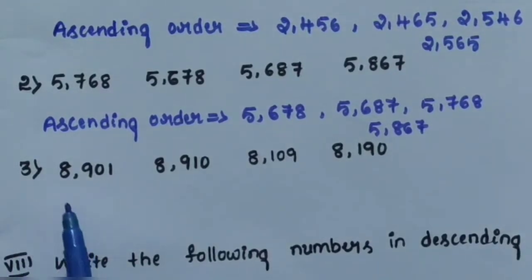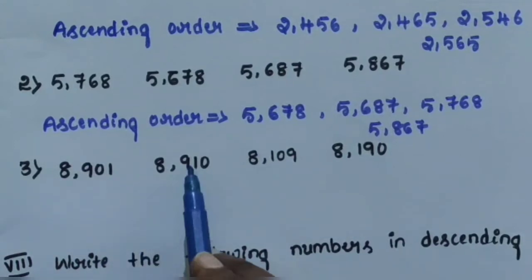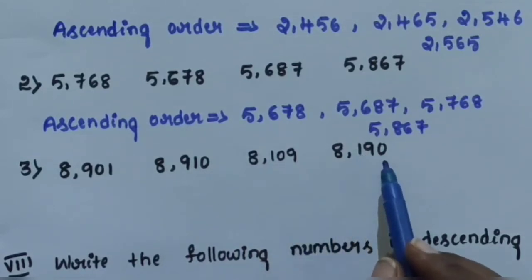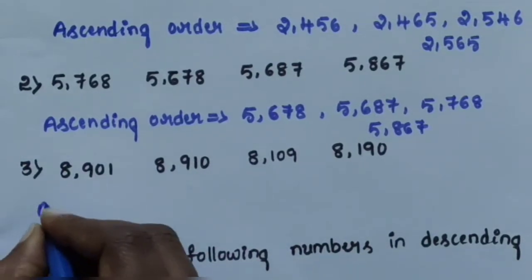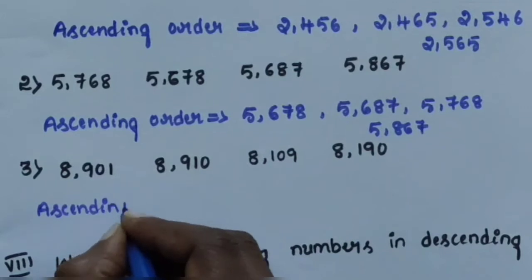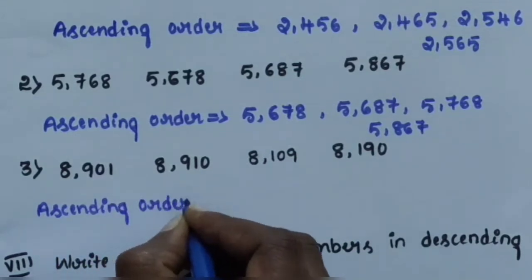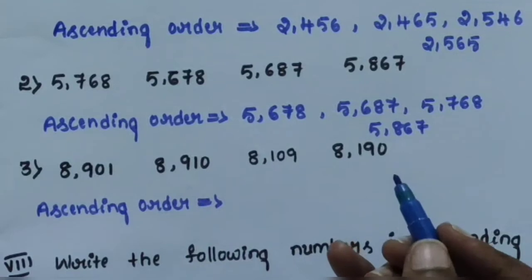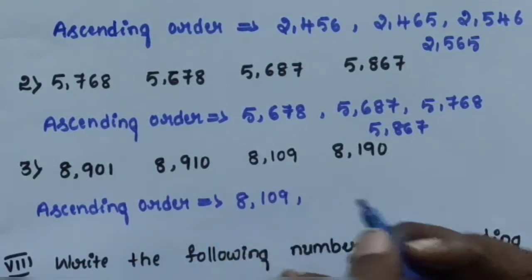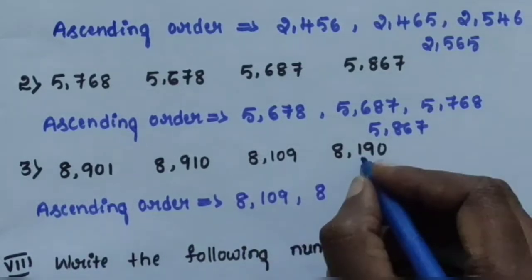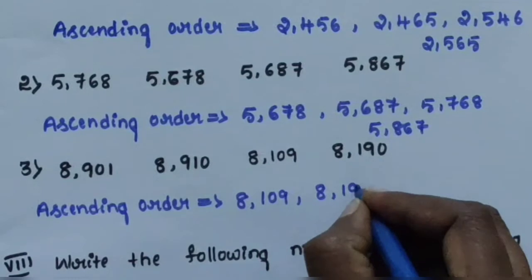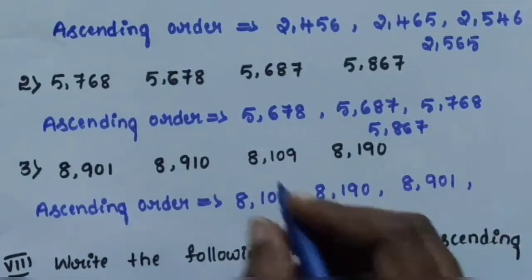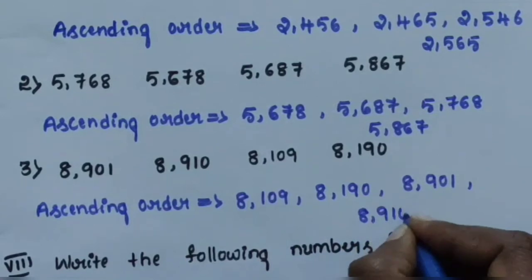Question number 3: arrange 8,901; 8,910; 8,109; and 8,190 in ascending order. 8,109 is the smallest number. So the order is: 8,109; 8,190; 8,901; and 8,910.